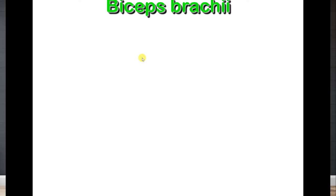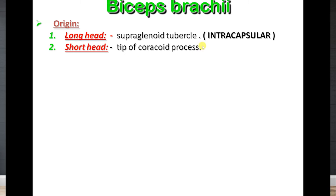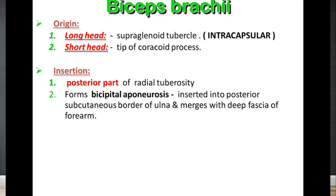The next muscle is biceps brachii. The name 'biceps' indicates it has two heads — a short head and a long head. The long head has a typical feature: it is intra-capsular in origin, taking its origin from the supraglenoid tubercle, which is present above the glenoid cavity. The short head, as seen previously, takes its origin from the tip of the coracoid process along with coracobrachialis.